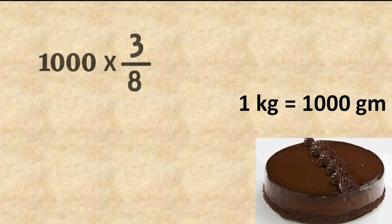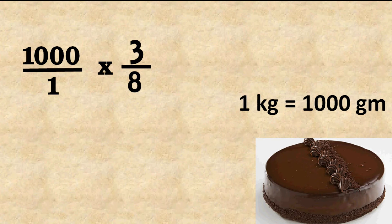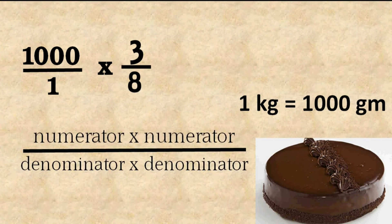What does three-eighths kg mean? One kilogram equals one thousand grams, so three-eighths kg means three-eighths of one thousand grams — that is one thousand multiplied by three-eighths grams. One thousand is a whole number with no denominator, but we can write it as one thousand over one, since dividing anything by one keeps the number the same.